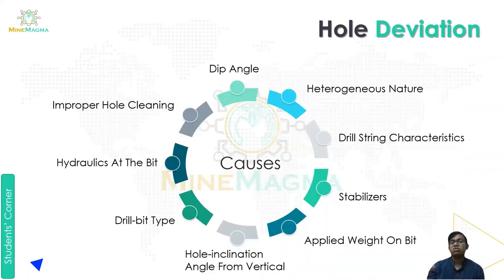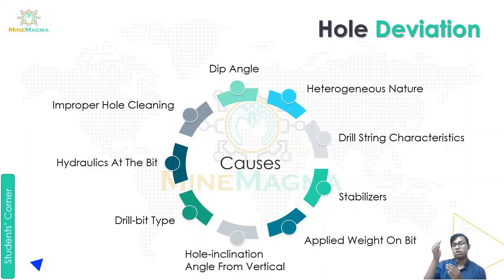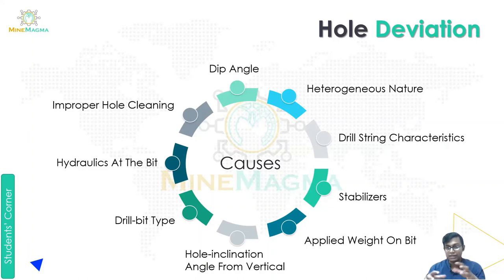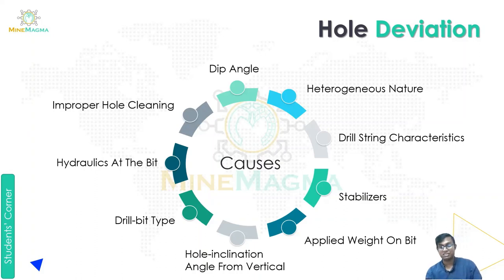Now, hole deviation refers to when a hole deviates from its planned direction. The first two causes are dip angle and heterogeneous nature — when the layers of soil or rock vary in nature, drilling through them can cause the hole to start deviating.